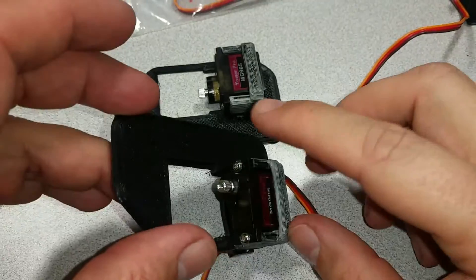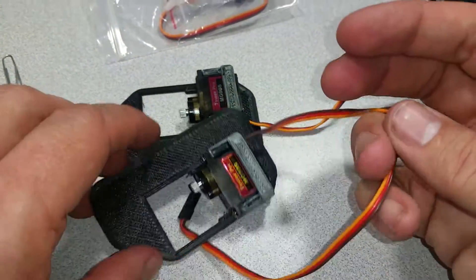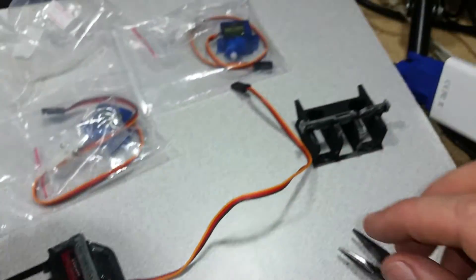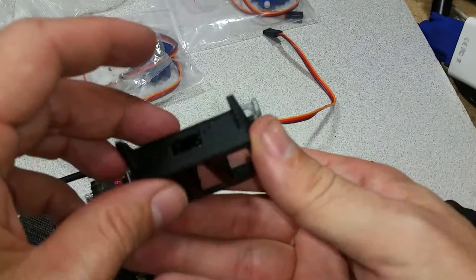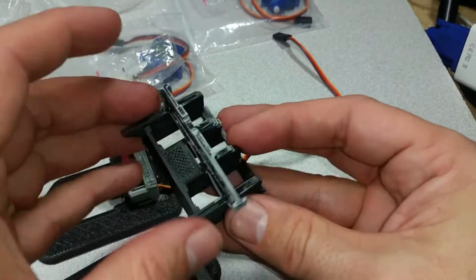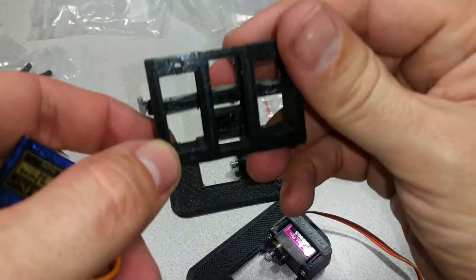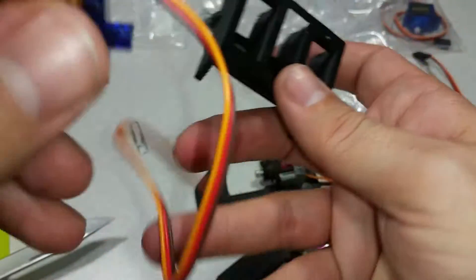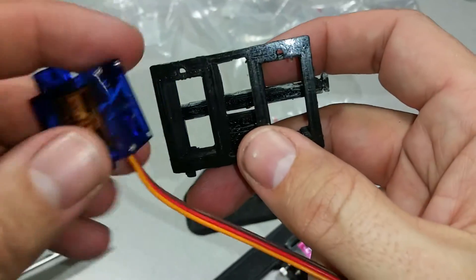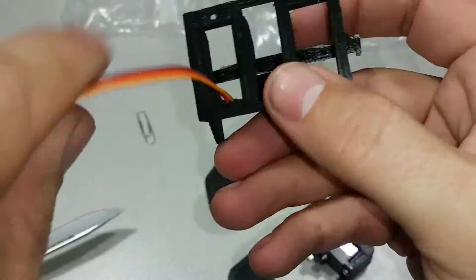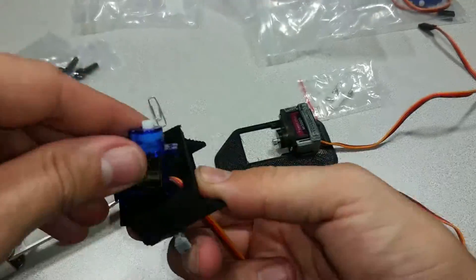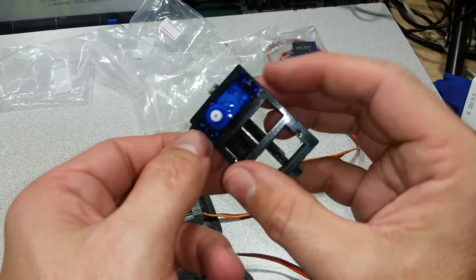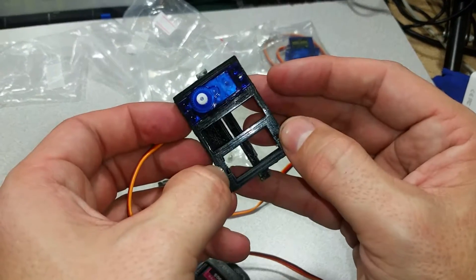Now that we have the servos mounted and screwed in and the cables extending, we will get to the hip servos. This is the pelvis piece and we will mount the servos in here. Now if you'll notice, one side has a groove in it, an indent, so you'll want to put the cord that's going to go onto the side where the groove is. Okay, so that's how that should look. And again, mount the two screws there. We'll do the same thing with the other servo.